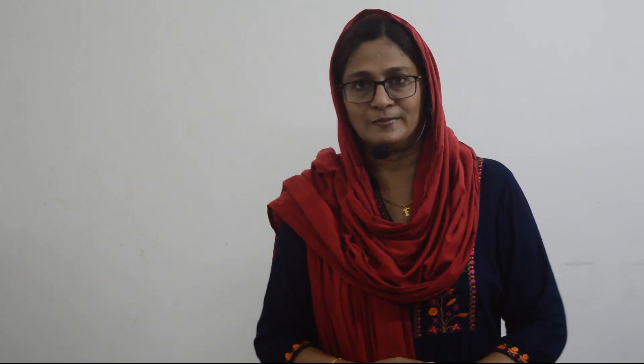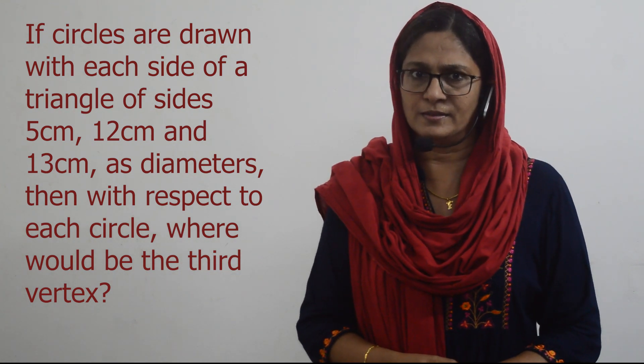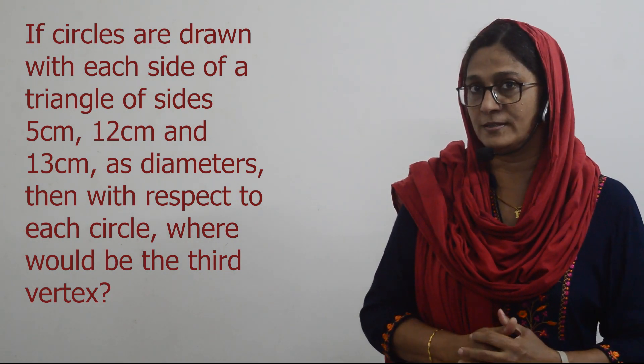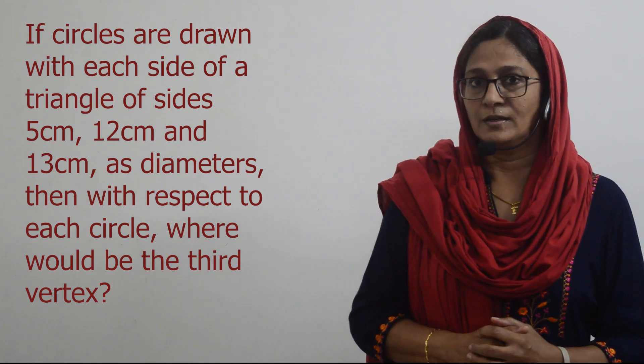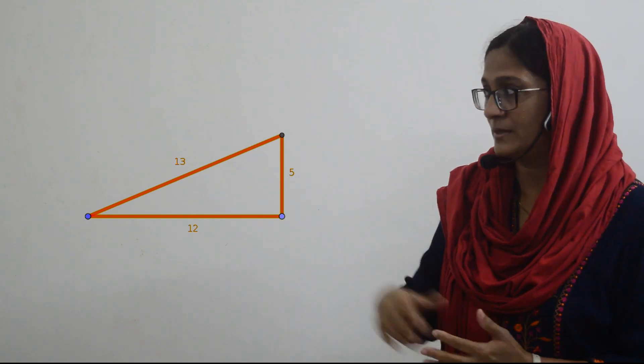Now look at this question: if circles are drawn with each side of a triangle — 5 cm, 12 cm, and 13 cm — as diameters, then with respect to each circle, where would the third vertex be? We need to check whether the circles drawn with these sides as diameters will have the third vertex inside, outside, or on the circle. Here is a rough figure of the triangle with sides 5 cm, 12 cm, and 13 cm.